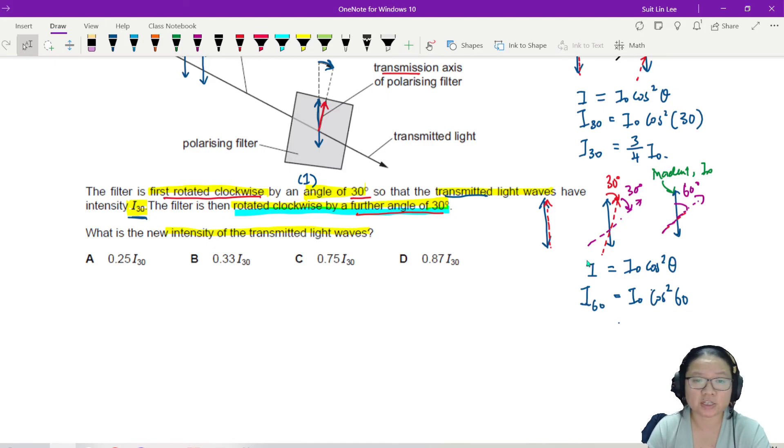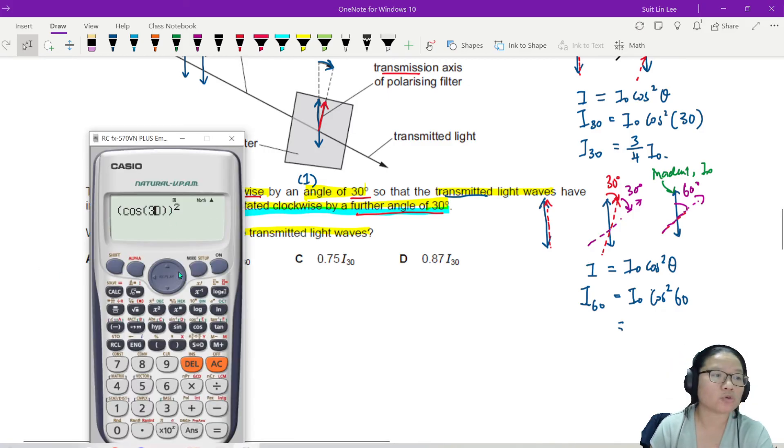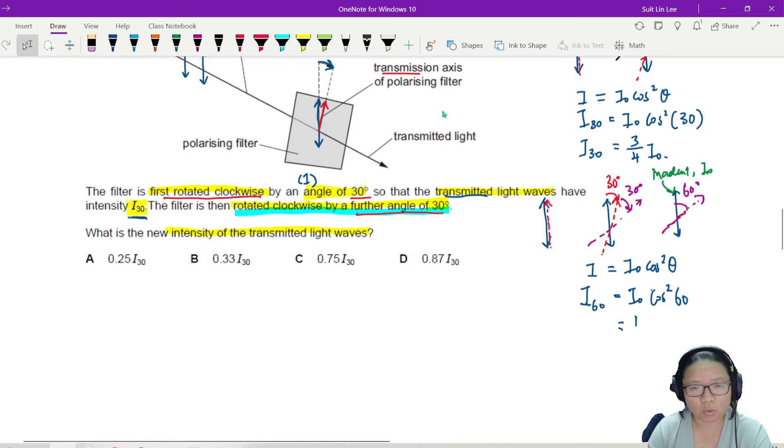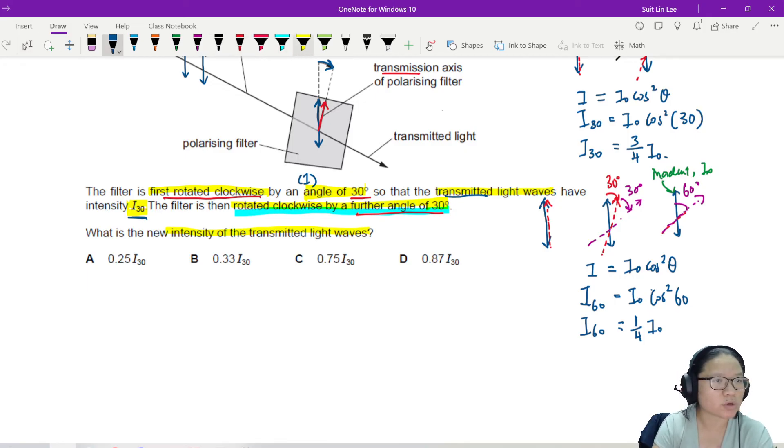But cos square 60 is 1 over 4, because cos 60 is half. Or you press calculator, delete the three, put 6. Now, 1 over 4. So this will be 1 over 4 I naught. But they want I 60 in terms of I 30. So I need to substitute, I mean I 60 in terms of I 30. So I need to substitute my I naught. So actually, let me teach you a hack.